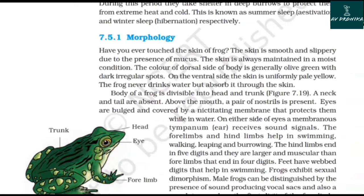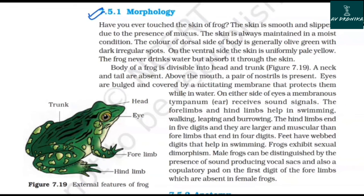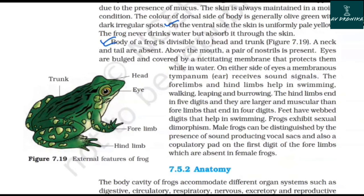7.5.1 Morphology. The skin of the frog is smooth and slippery due to the presence of mucus and is always maintained in a moist condition. The color of the dorsal side of the body is generally olive green with dark irregular spots, while the ventral side is uniformly pale yellow. The frog never drinks water but absorbs it through the skin. The body is divisible into head and trunk; a neck and tail are absent.